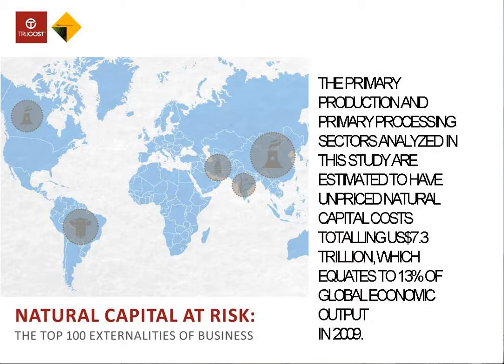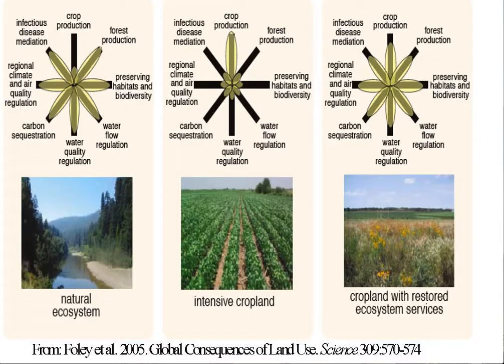These estimates have been used by companies like Puma to create an environmental profit and loss statement that helps them understand where their environmental impacts are really coming from all the way down the supply chain, and how they could reduce those impacts by redesigning and resourcing some of their products. The TEEB group, in collaboration with True Costs, recently estimated the primary production and processing sector's external costs at about $7.3 trillion per year.